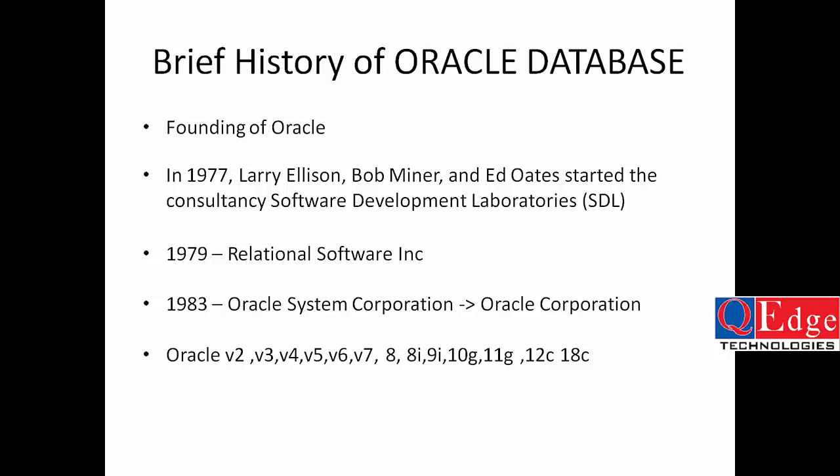Oracle version 7 was released in 1992, introducing PL/SQL stored procedures and triggers. Oracle version 8 was released in 1997 and supported partitioning of large tables. Oracle 8i was released in 1999, providing support for internet protocols and server-side support for Java.